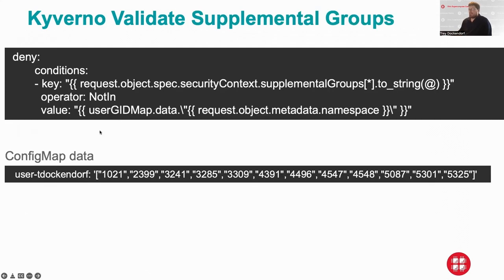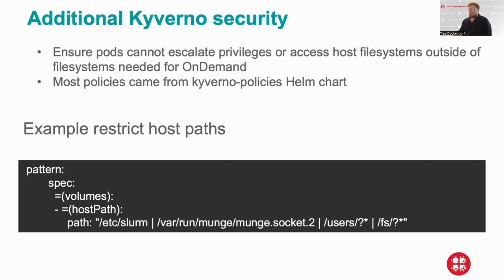We also validate supplemental groups, which is very important for filesystem access. The data is a JSON string of an array, and we're using a denying condition. Another policy restricts the host paths they can access — we allow them to access Slurm configs, the Munge socket for Slurm, and then user home directories and GPFS.